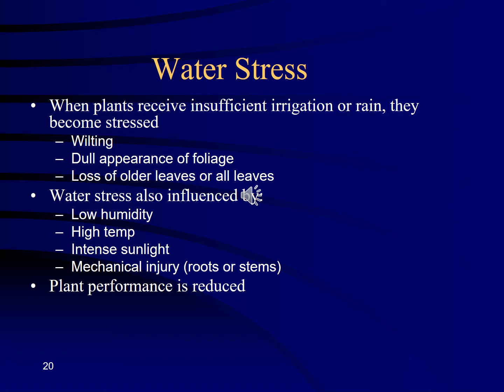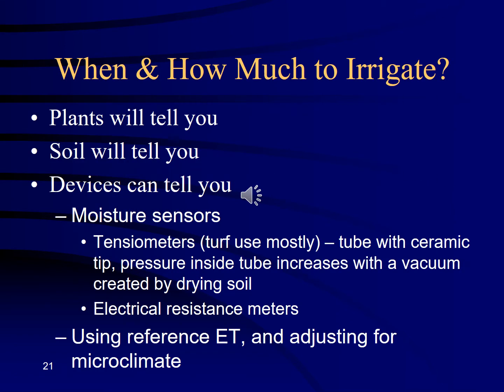How do you know how much to irrigate? The plants can tell you, but you can also measure soil moisture with devices, or by feeling it — always dig down a few inches to see if water from rain or irrigation really infiltrates deeply to the roots. Don't just scratch the surface. You can also use the evapotranspiration (ET) rate from local weather stations and adjust your irrigation amount as climate changes through seasons and days.